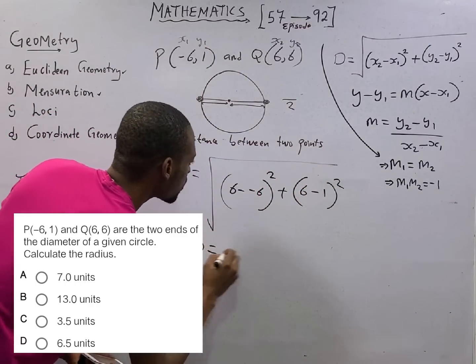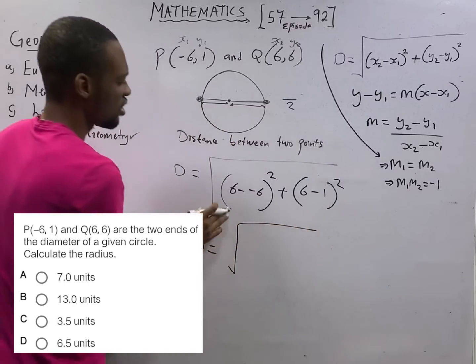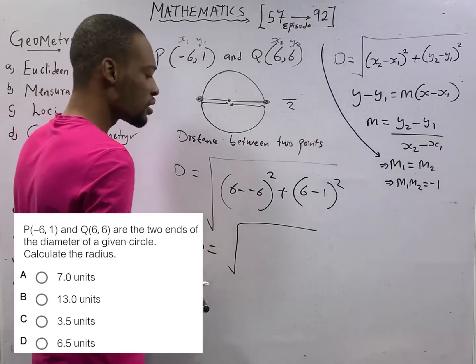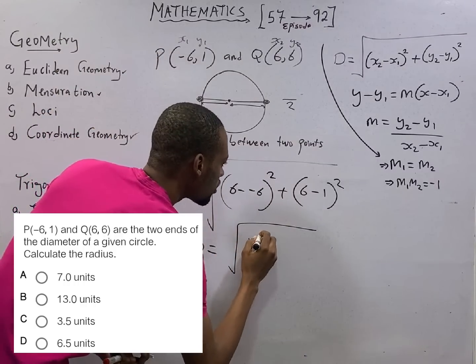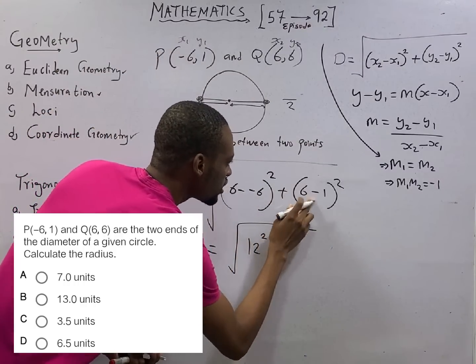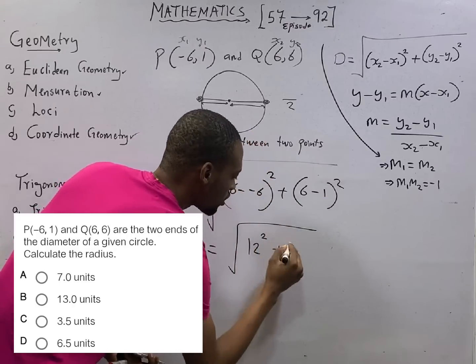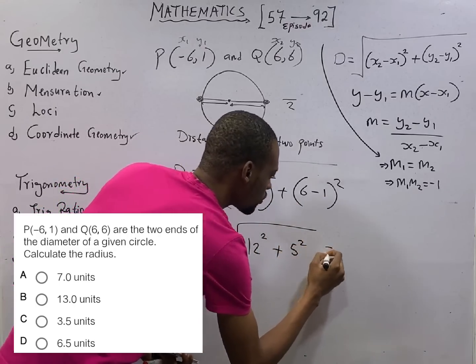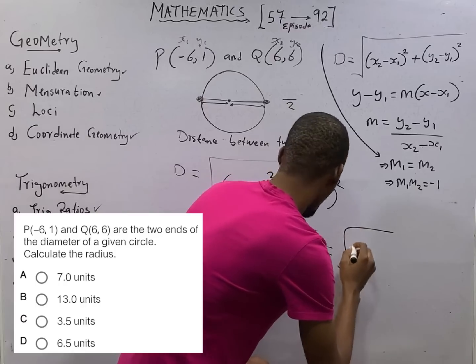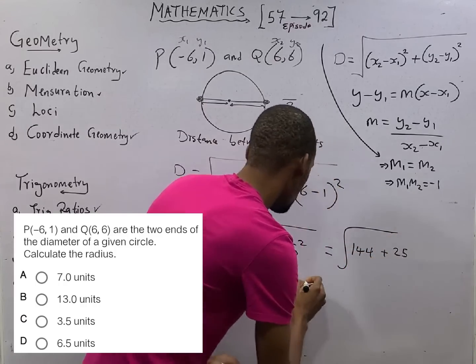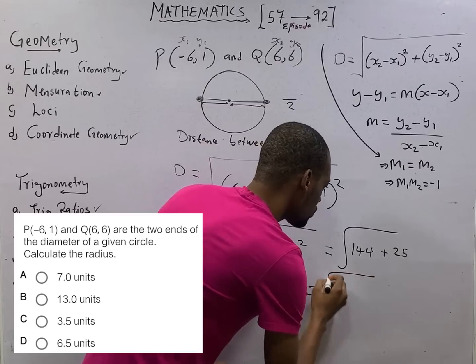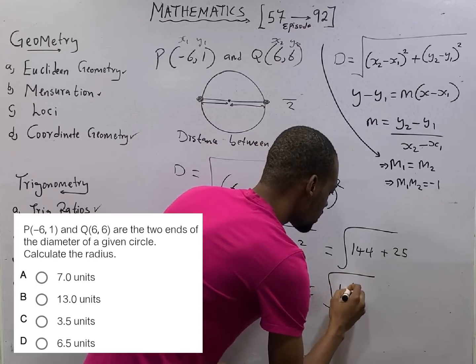Distance equals: 6 minus -6, that is 6 plus 6, 12, squared, plus 6 minus 1, that is 5, squared. This will give you 144 plus 25, and this will give you 169. So distance is square root of 169, and this is 13.